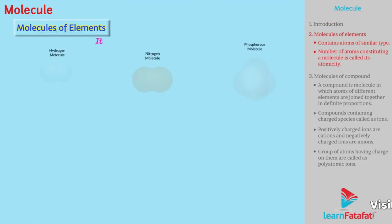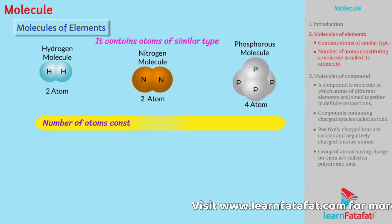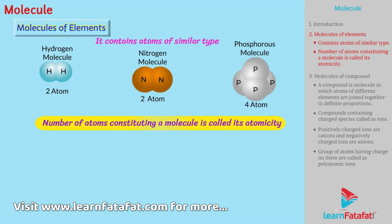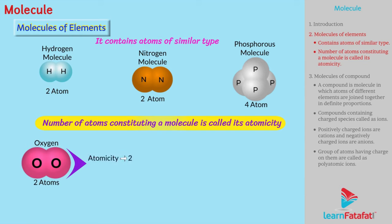Molecules of elements. This contains atoms of similar type. The number of atoms constituting a molecule is called its atomicity. For example, oxygen has two atoms. So, its atomicity is two. Therefore, we can say that oxygen is diatomic.